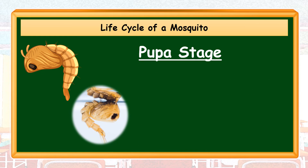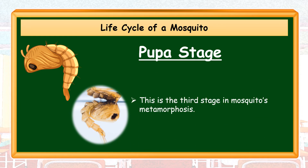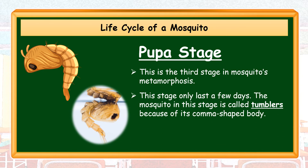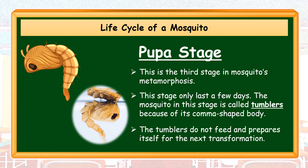Pupa stage. This is the third stage in the mosquito's metamorphosis. This stage only lasts a few days. The mosquito in this stage is called a tumbler because of its comma-shaped body. The tumblers do not feed and prepare themselves for the next transformation.